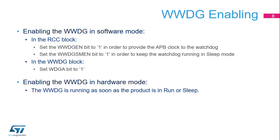Note that once the watchdog is enabled, the application cannot disable it — only a system reset can disable the watchdog clock. The low-power-enabled bit can be set as well if the application wishes to keep the window watchdog activated even if the product is in sleep mode. In hardware mode, there is no need to enable the watchdog. The WWDG is counting down when the product is in run or sleep mode, and the bits WWDGEN and WWDGSMEN are forced to 1 by the hardware.